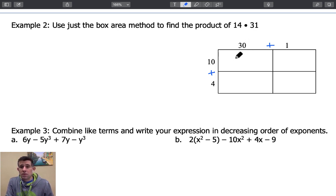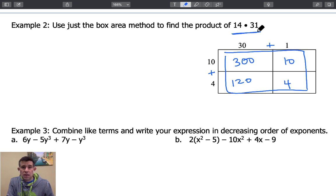And we're going to find the product of those dimensions. So 10 times 30 gives me 300, 10 times 1 is 10, 30 times 4 is 120, and then 4 times 1 is 4. Therefore, when we add up the area of all four of these smaller rectangles, we will find the product of 14 times 31.